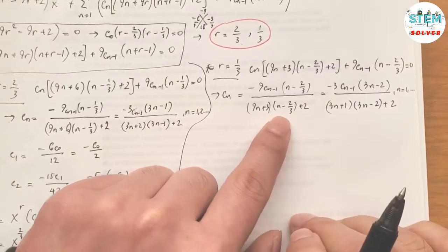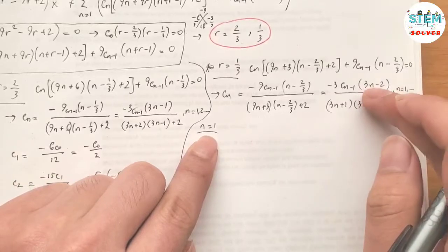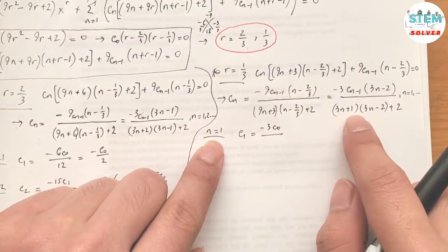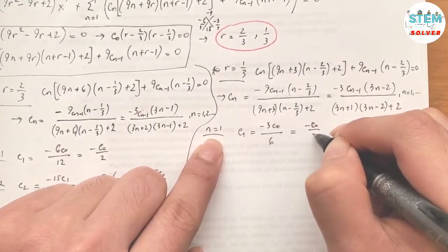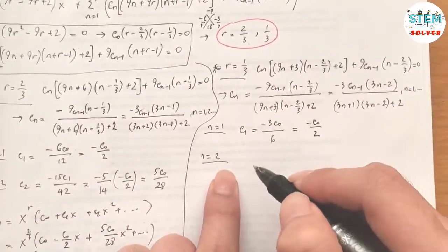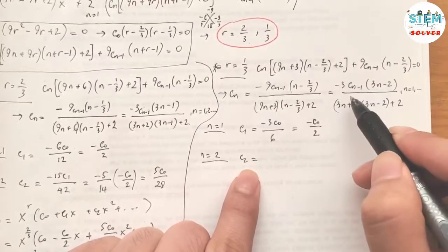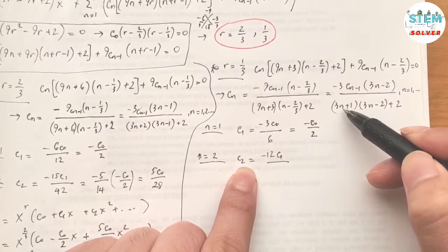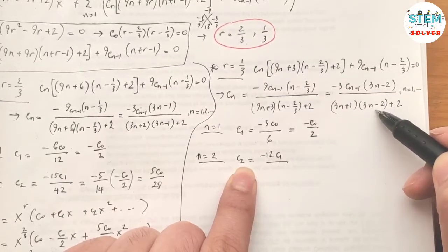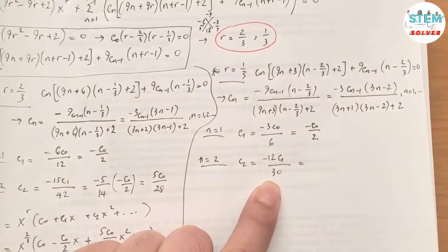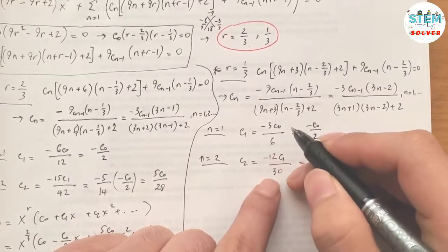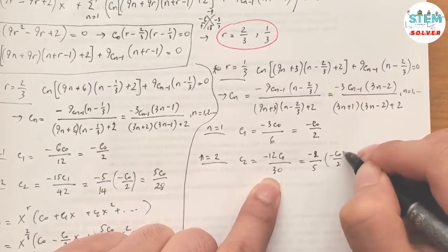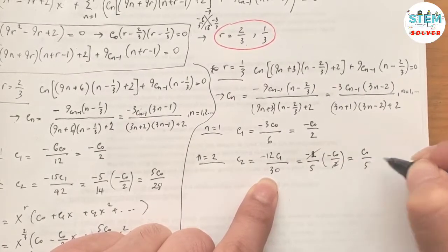For n=1: c₁ = −3c₀(1) / (4 · 1 + 2) = −3c₀/6 = −c₀/2. For n=2: c₂ = −3c₁ · 4 / (7 · 4 + 2) = −12c₁/30. Simplifying by dividing by 6 gives −2/5. Since c₁ = −c₀/2, substituting gives c₂ = c₀/5.